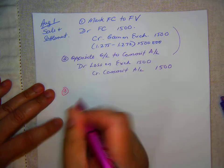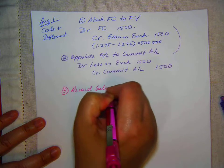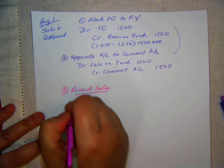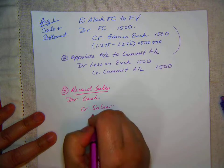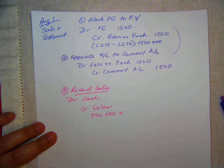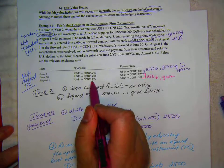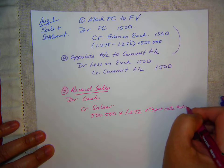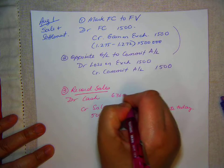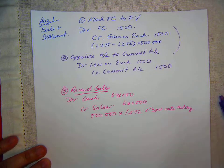Now we can record the sale — the order doesn't really matter, you could have done the sale first. Record sale: debit cash, credit sales for 500,000. It's not a forward contract, so we should be using the spot rate today, which is 1.272. And finally we can settle the forward contract.